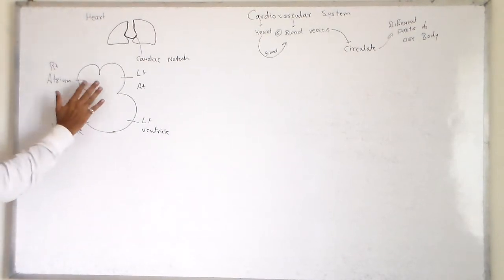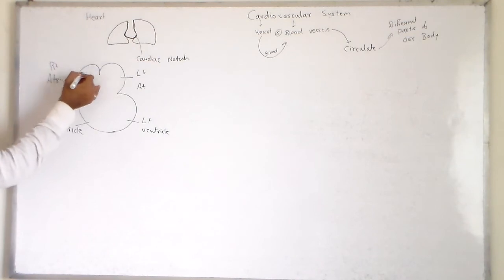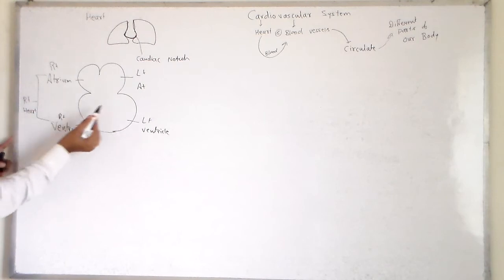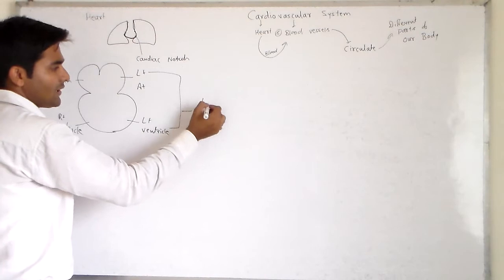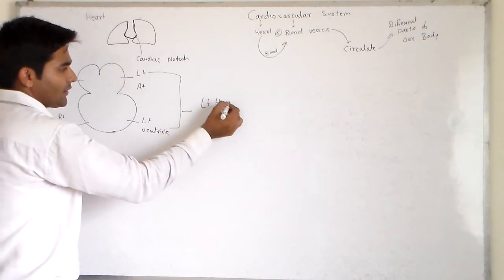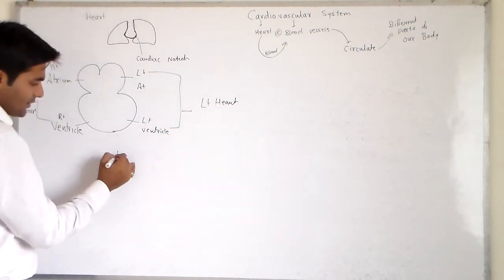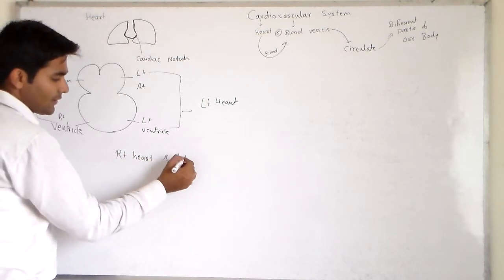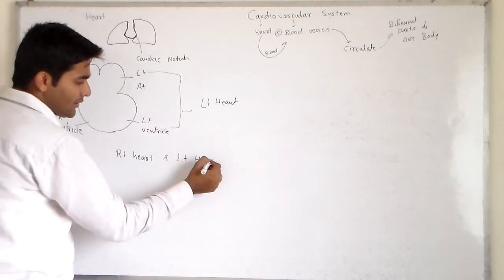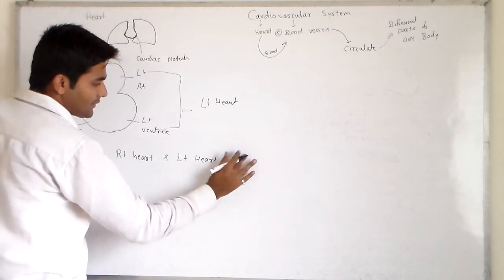My dear friends, heart. Right atrium and right ventricle unite to form right heart. And left atrium, left ventricle together called as left heart. Right heart and left heart collectively called as heart.